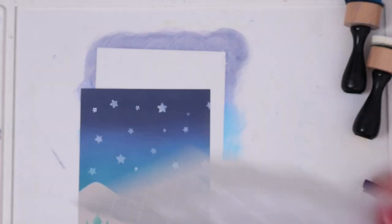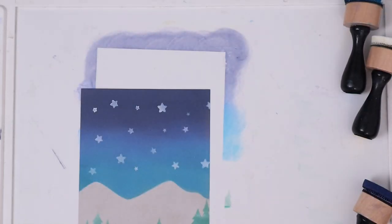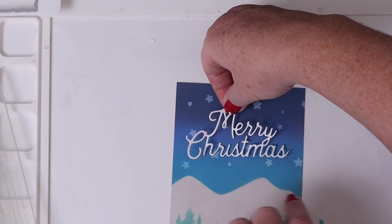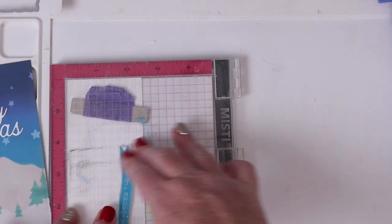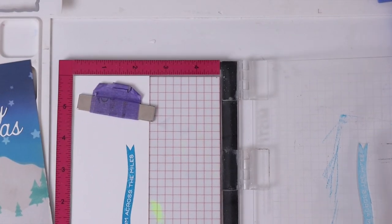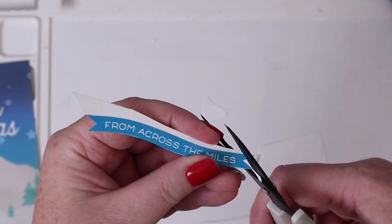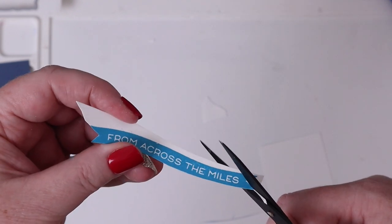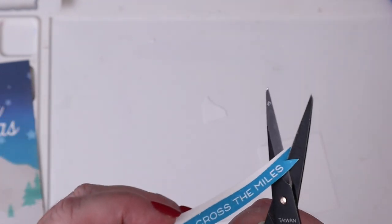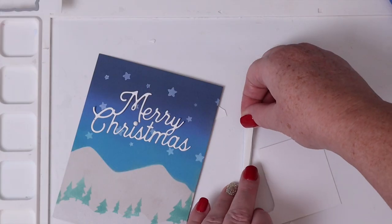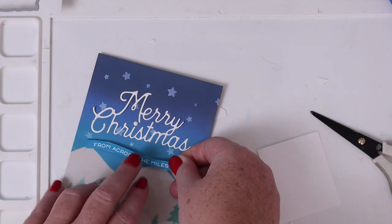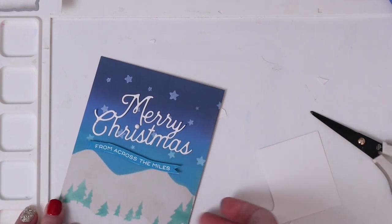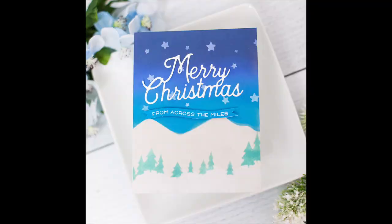I cut the Merry Christmas word die without the shadow and used iCraft Easy Cut adhesive behind it to adhere it onto the sky. I'm stamping one of the banner sub-sentiments from the stamp set in Mermaid Lagoon and then fussy cutting it right out up to the edge of the stamp so there's no white border, and layering with a thin strip of foam adhesive behind it over the Mermaid Lagoon part of the sky.